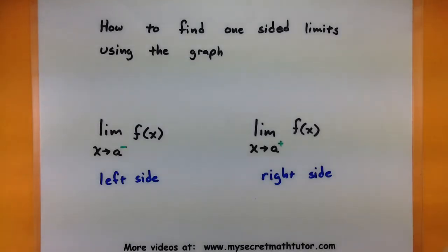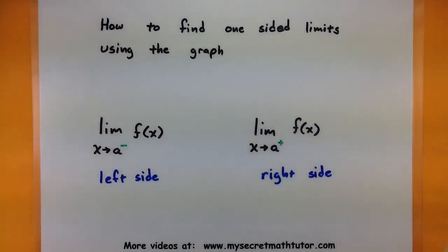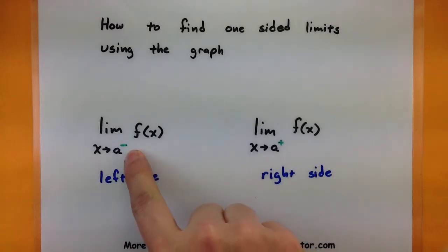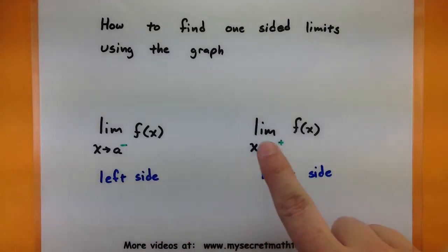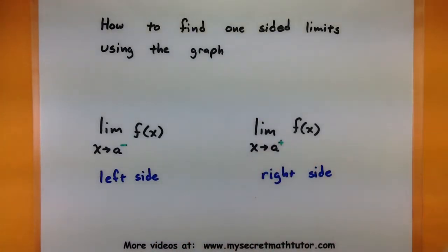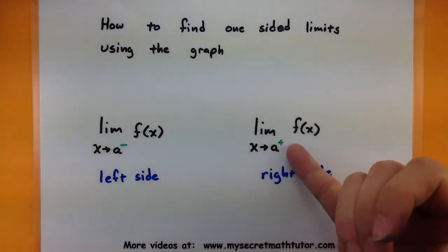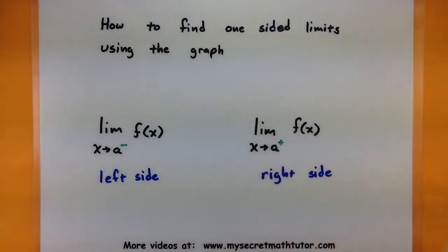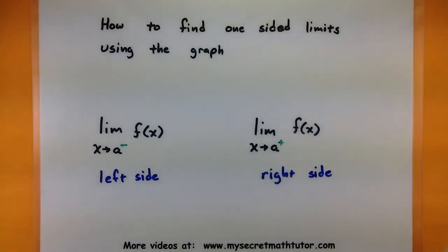Recall that when working with one-sided limits, we'll be approaching some value of x from either the left side or the right side. Our clue on which side we're approaching will be that little symbol that looks like a power on the value it's approaching. So if it's a negative sign, it'll be approaching from the left side; a positive sign means approaching from the right.